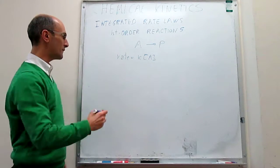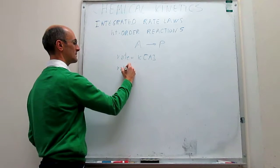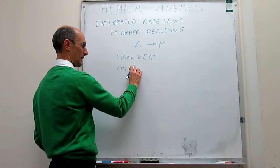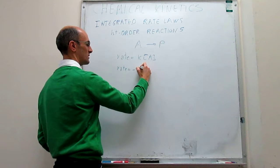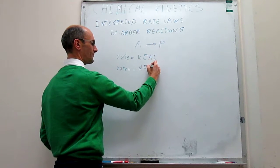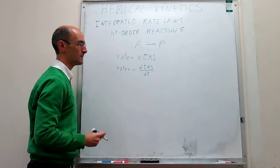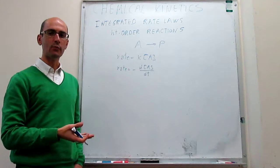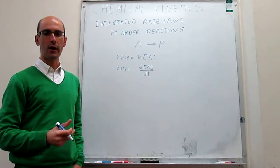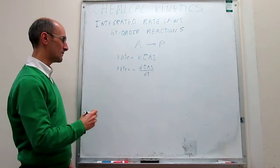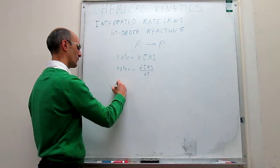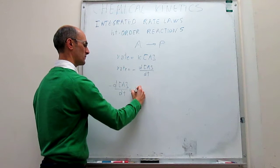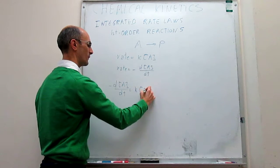We also know that the definition of the rate is simply the speed at which reagents are transformed into products — the speed at which the concentration changes. So we know as well that the rate has this definition. If we equate these two expressions, we will come up with a differential expression for how the concentration of A changes with time. This is going to be equal to the rate that we obtain from the rate law.